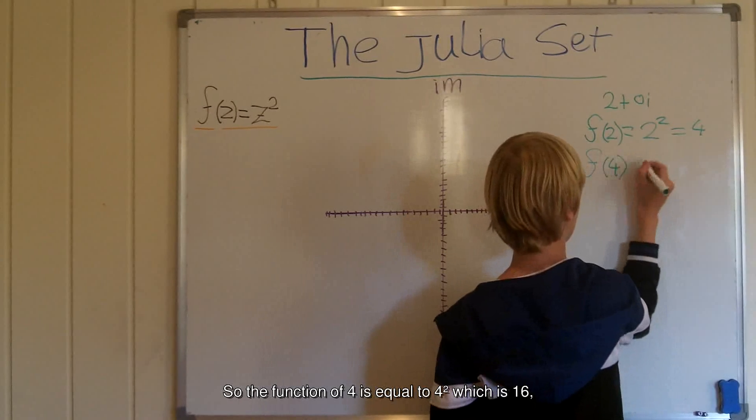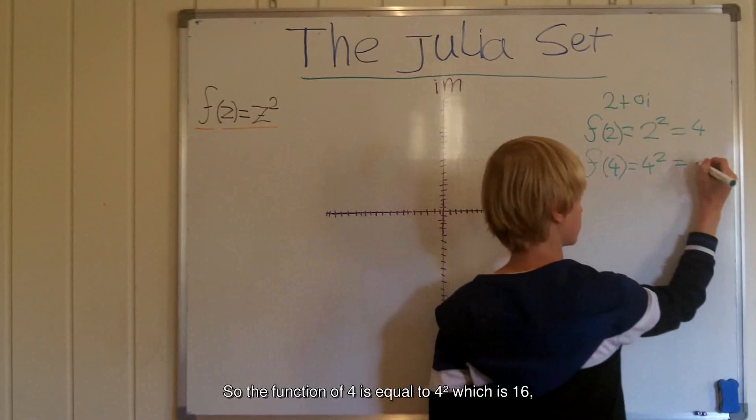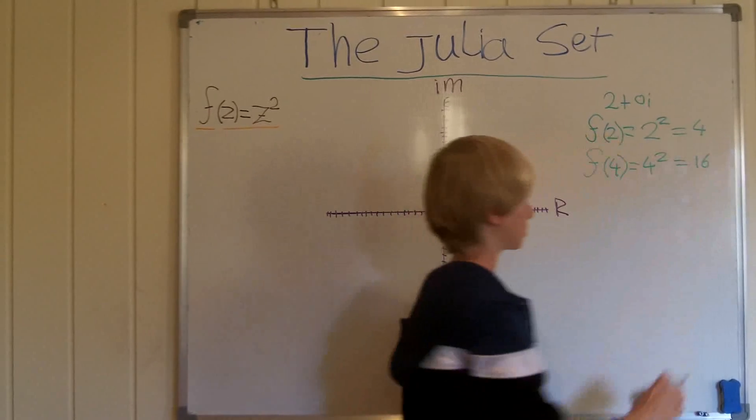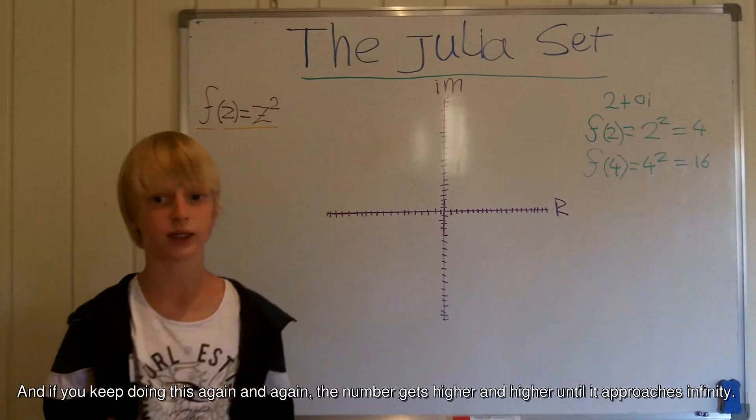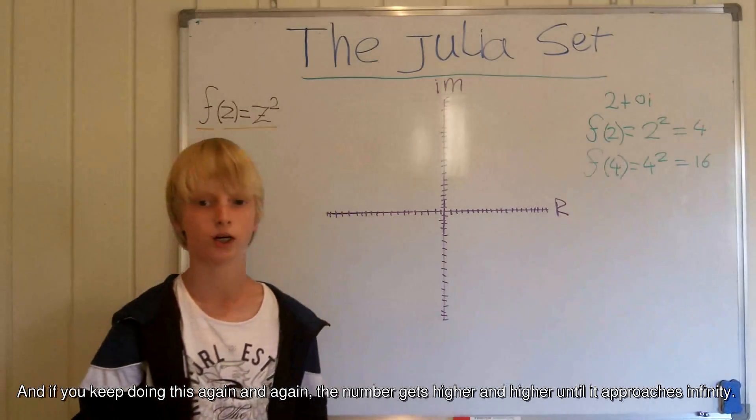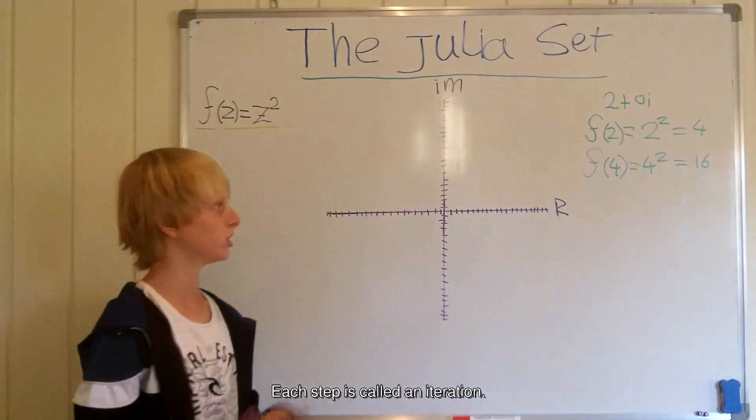So the function of 4 is equal to 4 squared which is 16. And if you keep doing this again and again, the number gets higher and higher until it approaches infinity. Each step is called an iteration.